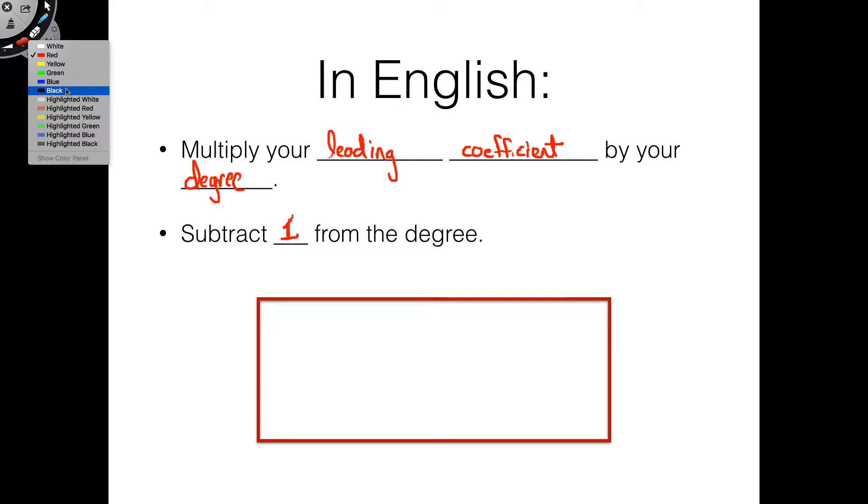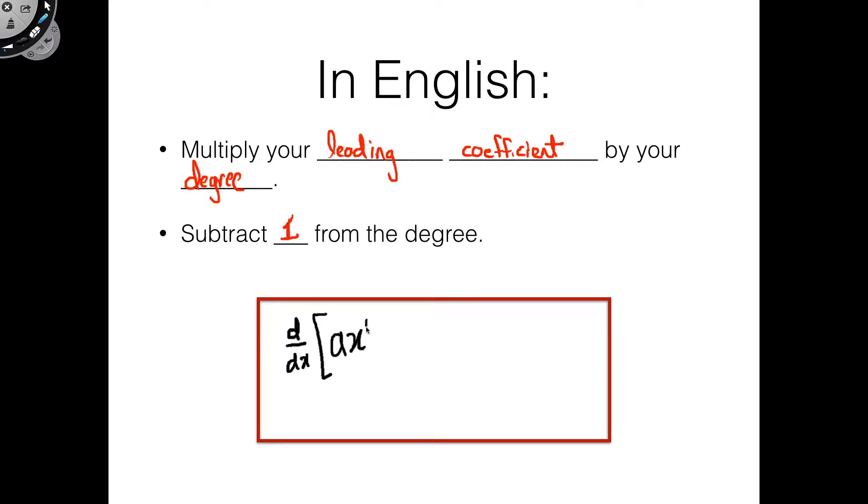So let's just go ahead and write this out as a definition. The derivative of a times x to the n equals n times ax to the n minus 1. So that would be your definition of how to calculate derivatives using the power rule.